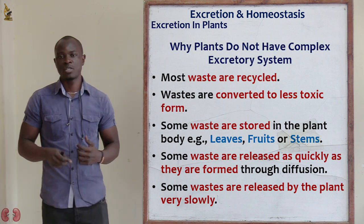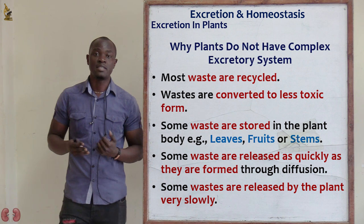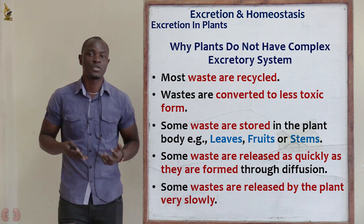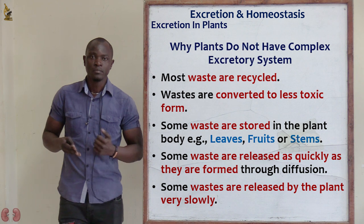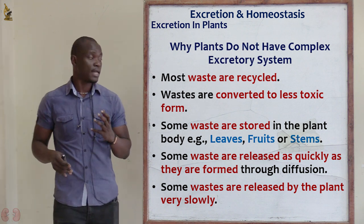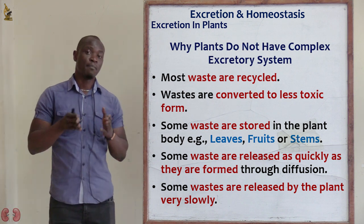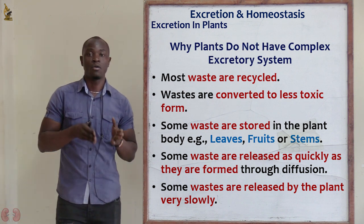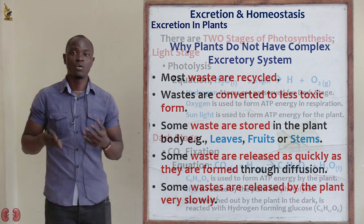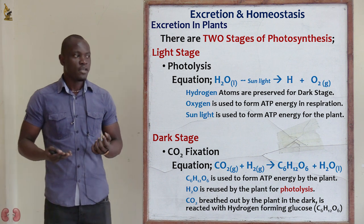Plants do not have a complex excretory system. There are different reasons for this. The first reason is that waste products of plants are always being recycled. So plant waste is always recycled.